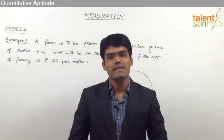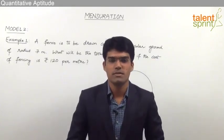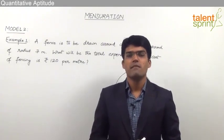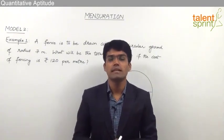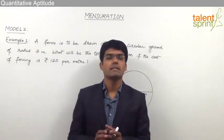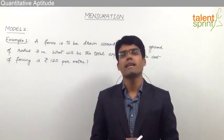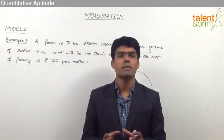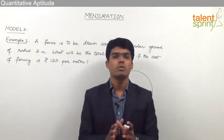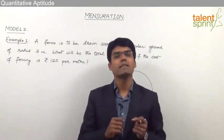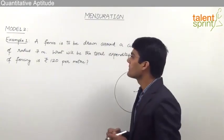Let us now take the next set of questions from the topic of mensuration, where we have to indirectly use either the formula of perimeter or the area of a two-dimensional shape to get the required answer. Let us look at the first example.